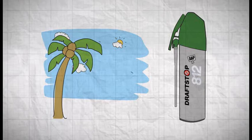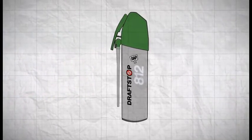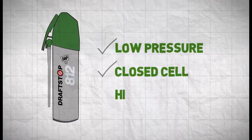Your foam will be ready to go when you get back. And like the professional applicator version of DAP DraftStop 812 Polyurethane Window Indoor Foam, it's low pressure, closed cell, and highly flexible.